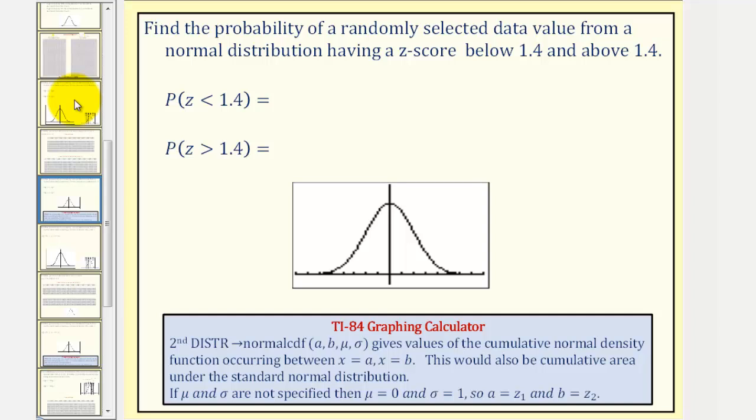For our first example, we want to find the probability of a randomly selected data value from a normal distribution having a z-score below 1.4, meaning P(z < 1.4), and the probability that the z-score would be above 1.4, given as P(z > 1.4).